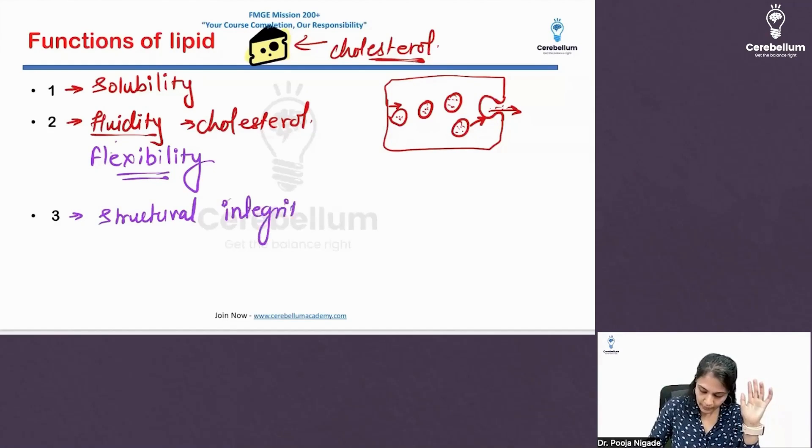The third thing is we have to maintain the structural integrity. We have to maintain the structural integrity and that is also done by these lipids, okay? So, these are the main three functions. You have to remember them, okay? So, it's confusing. What is confusing?